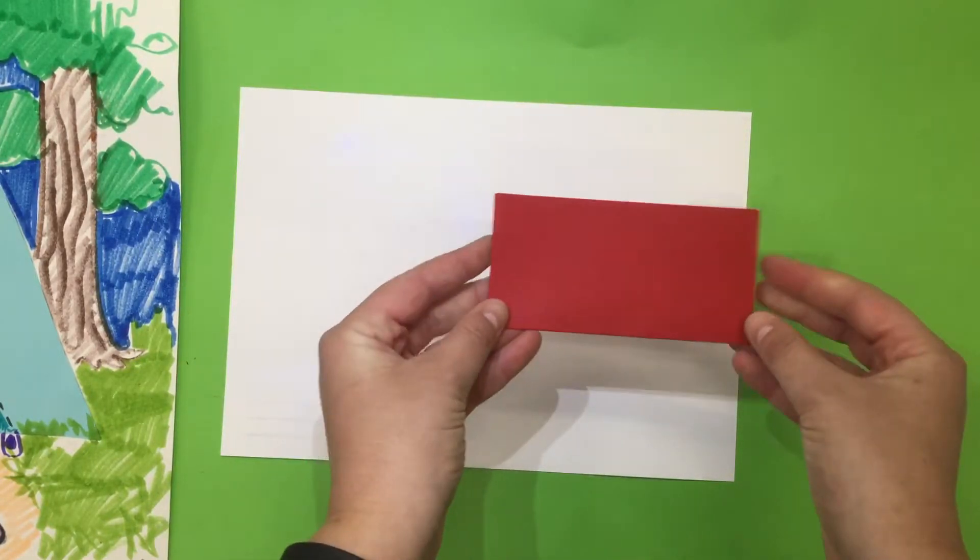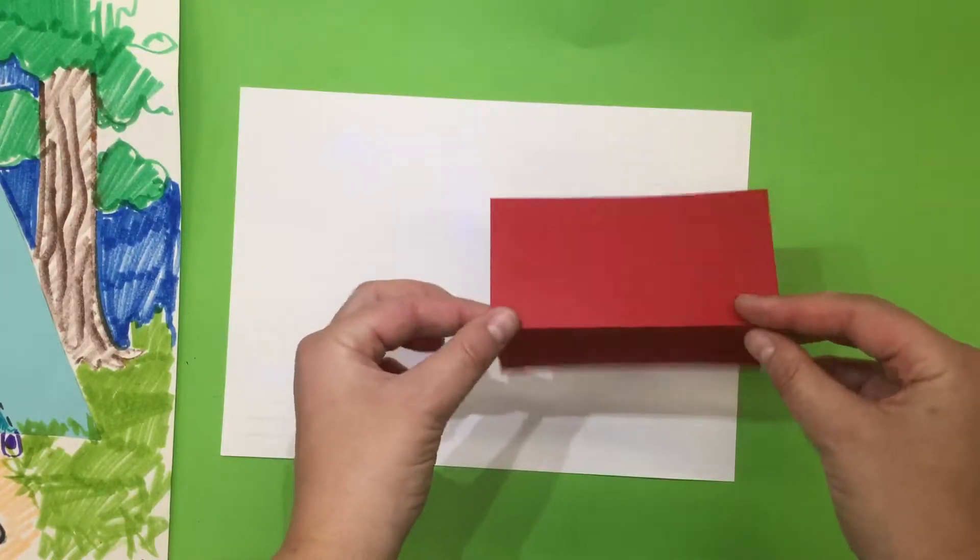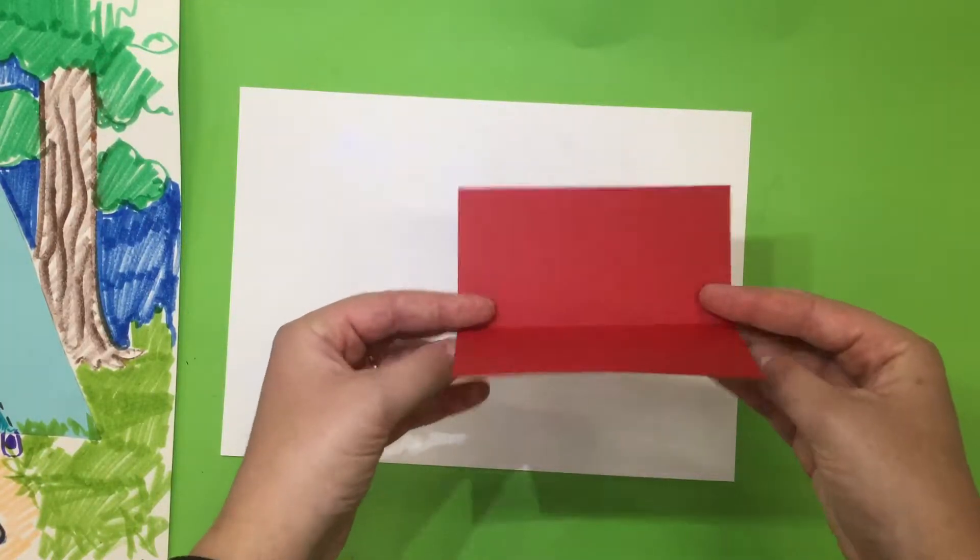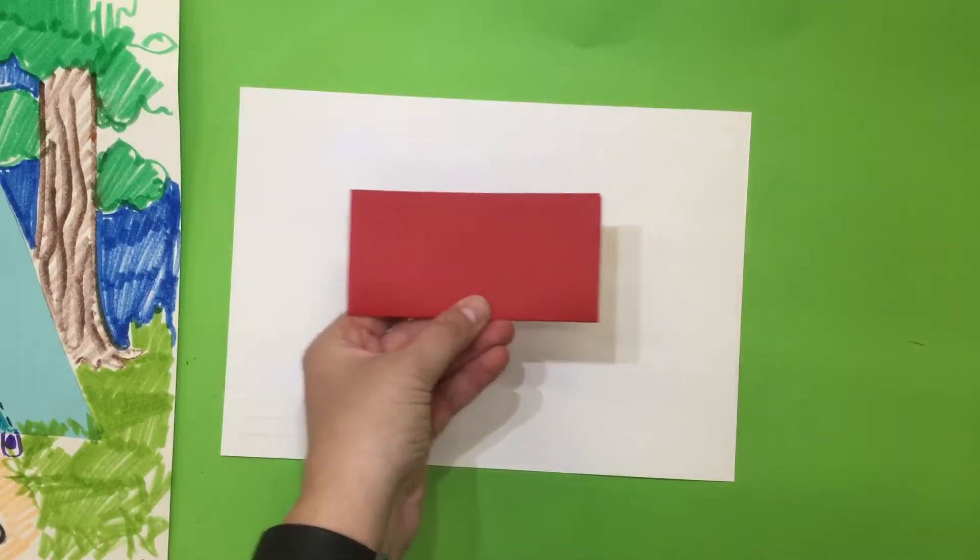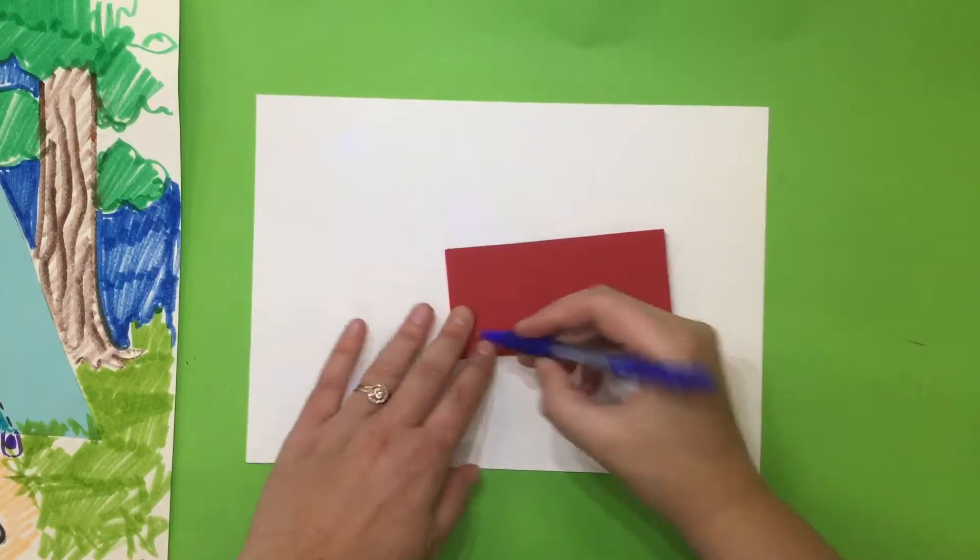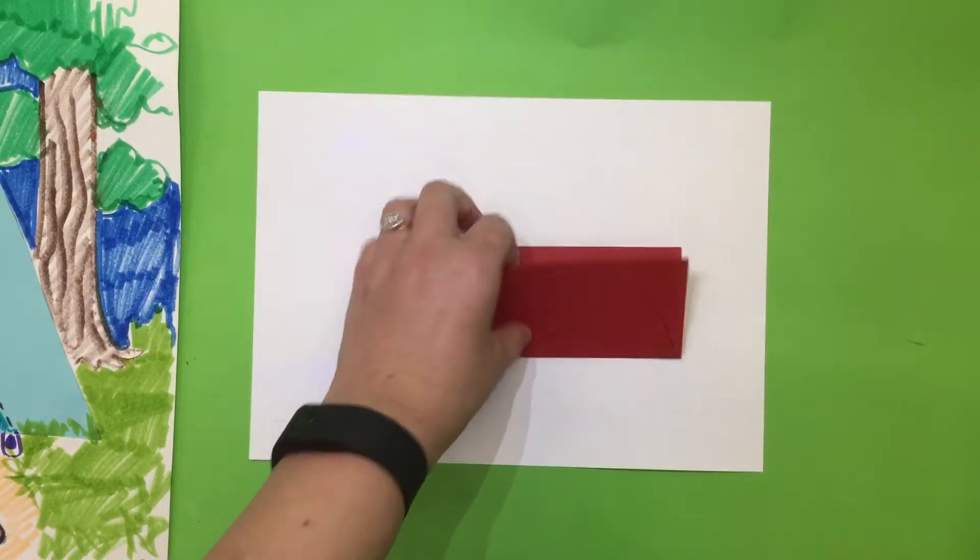I first fold my paper in half and then I have a folded part and an open part. On my folded part is where I can first draw my rainbow and then cut.